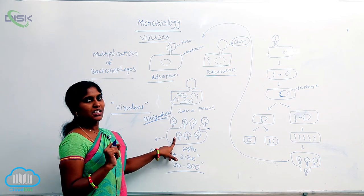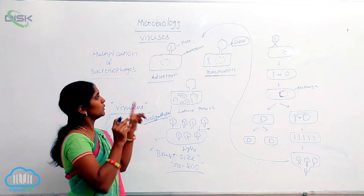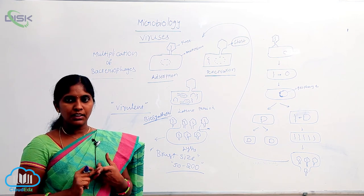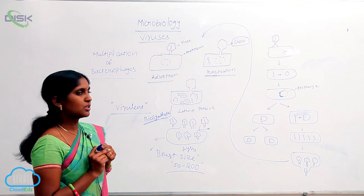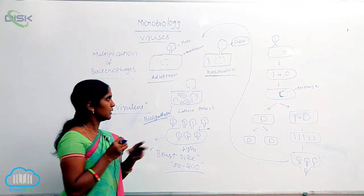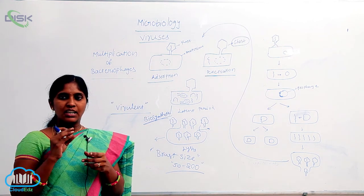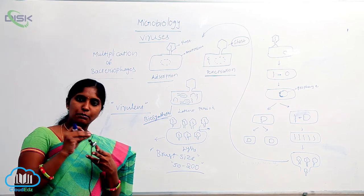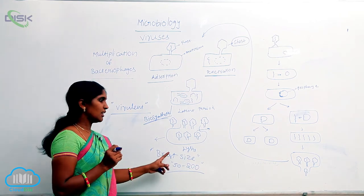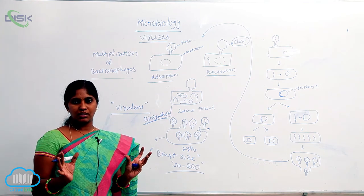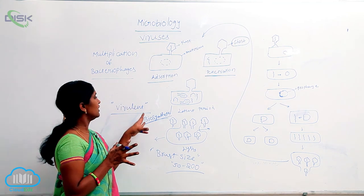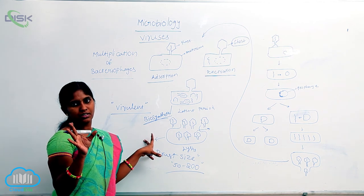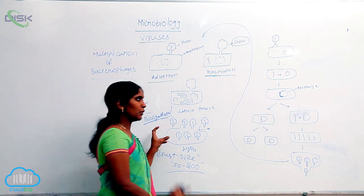This is the lytic cycle. The highlights are: first, the viral particle attaches to the bacterium — that is adsorption. Then entry of the viral DNA into the bacterium — that is penetration. Then the biosynthetic stage, where head, tail, and DNA particles are synthesized separately. At the maturation stage they mature, then at the lysis stage they are released by killing of the bacterial cell. The phages involved in the lytic cycle are called virulent phages.